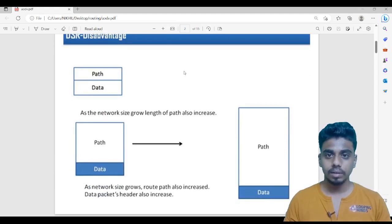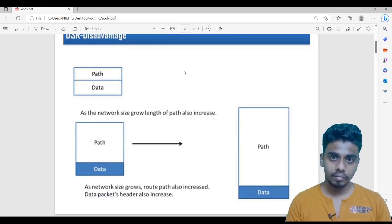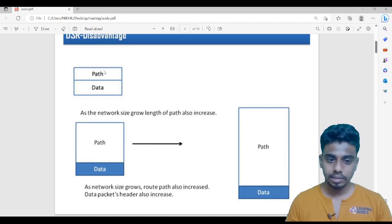we were passing the route request packet to the neighbors. In that packet, we were even passing the path. That data packet was containing data as well as the path. Suppose that the network is huge, then the path would increase. Then this would not be optimal.